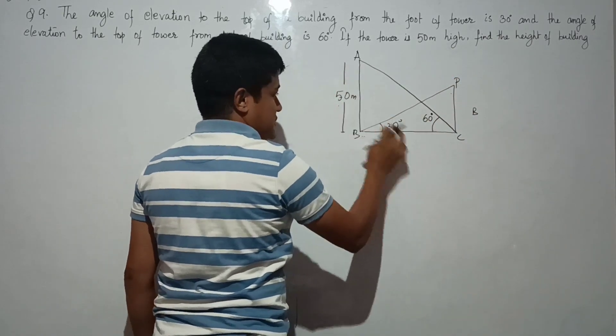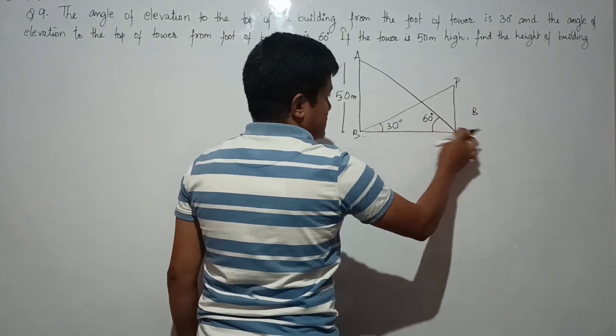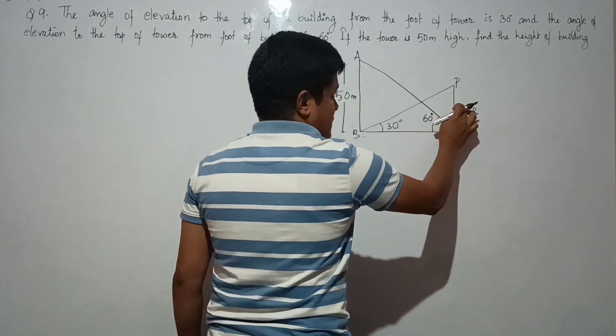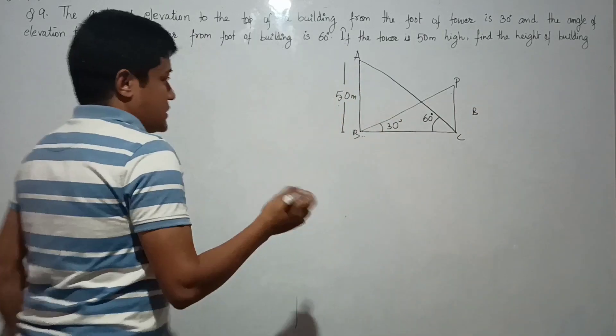60 degrees and 50 meters on the same base. So the base is PBC. That means 30 degrees and the base... The height of the building... Let us